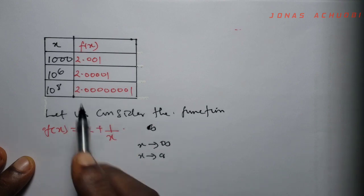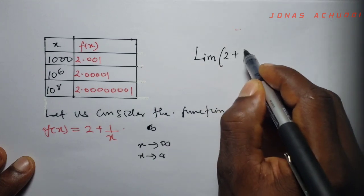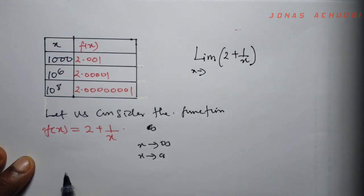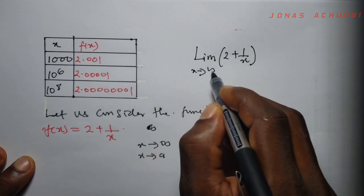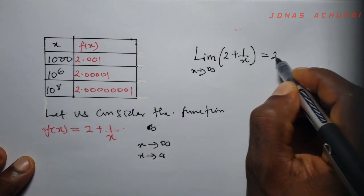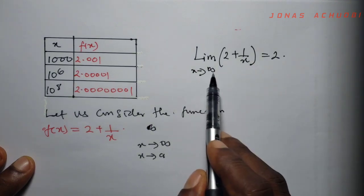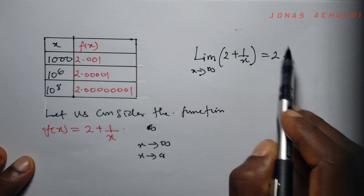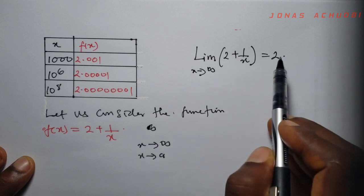So what do we say in this case? We say that the limit of the function 2 plus 1 over x, as x tends to infinity, is equal to 2. This means that as the value of x becomes very large such that it goes towards infinity, this function goes towards 2. So the limit of this function as x tends to infinity is equal to 2.